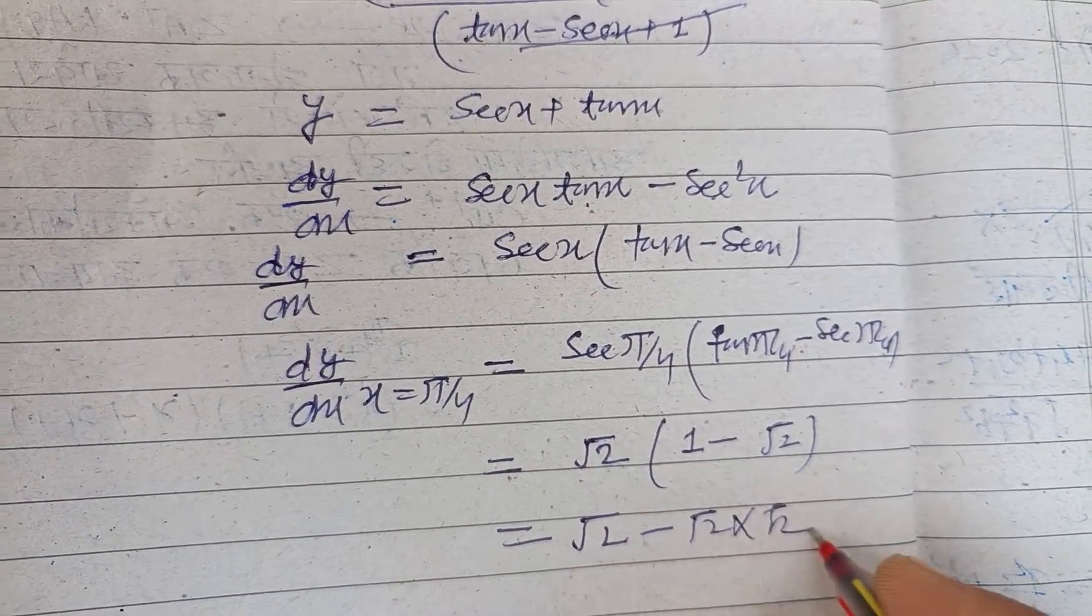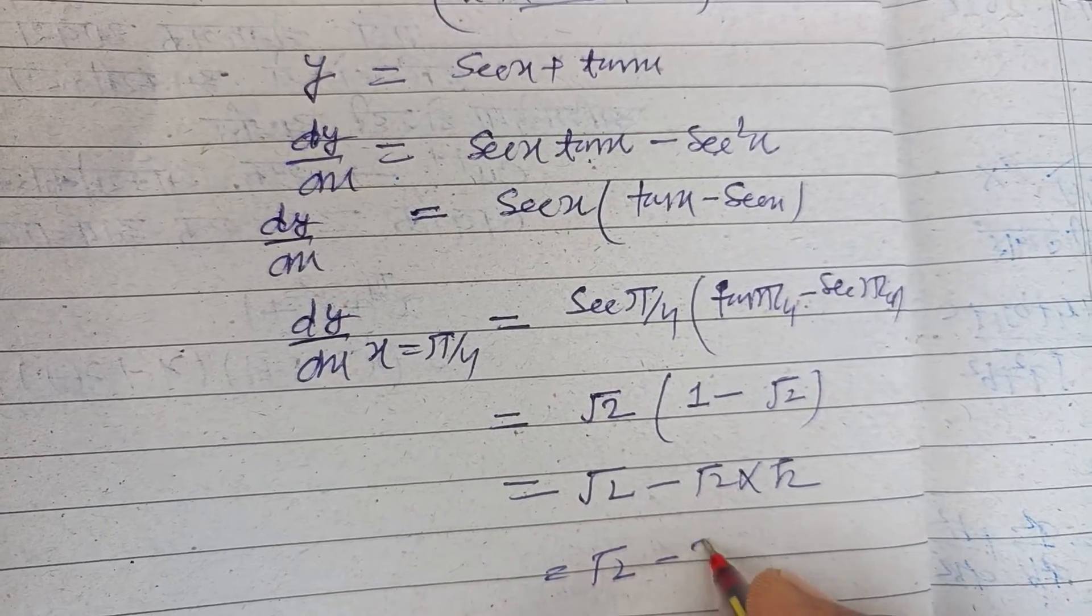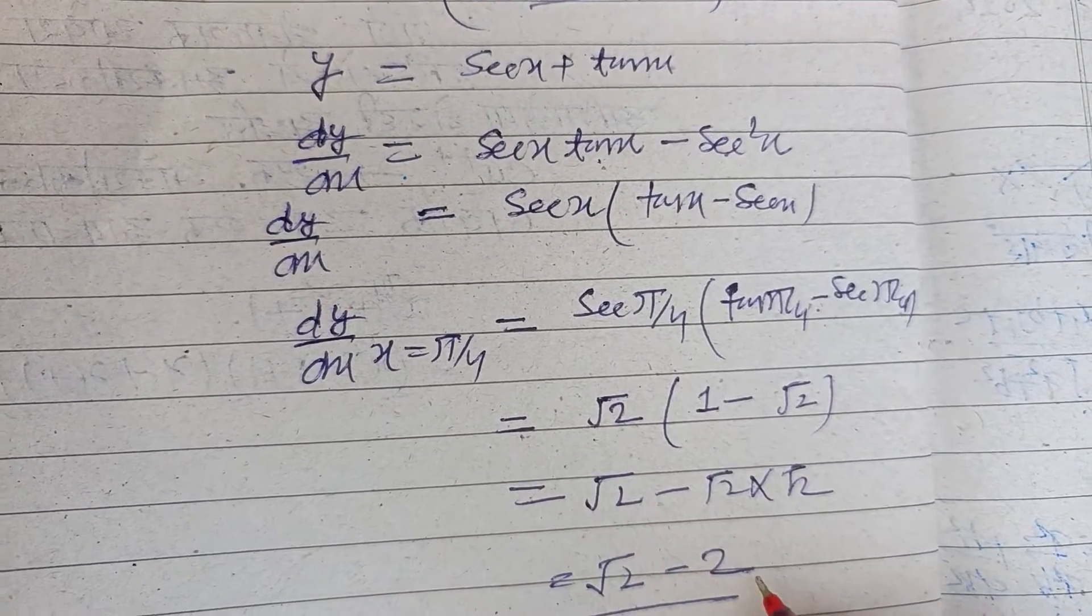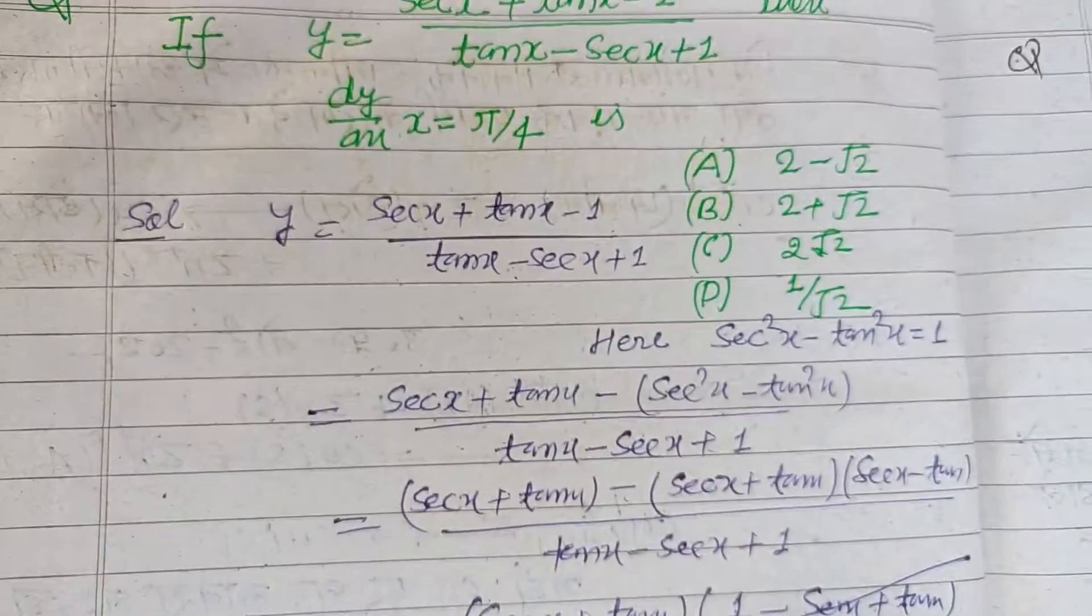On multiplication: √2 into √2... √2 into √2, so this is √2 - 2. This is the correct answer which is found in option...